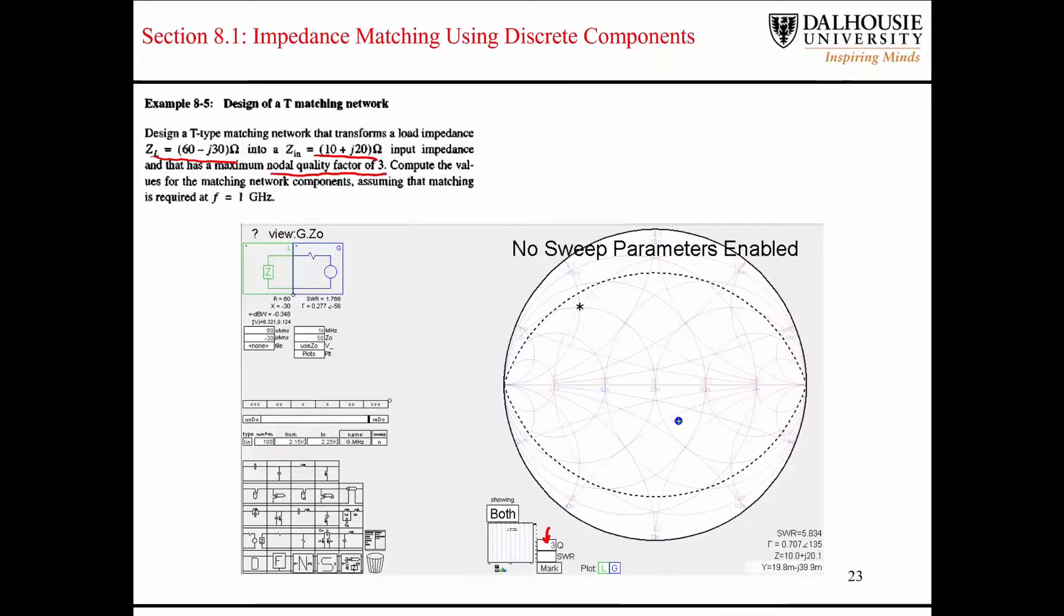When it comes to designing matching networks, if we are given a nodal quality factor of a particular value, it just means that our impedance transformations have to stay inside the boundary that's given by our particular quality factor. So we can make a transformation down here, but we have to stop at where the boundary is.